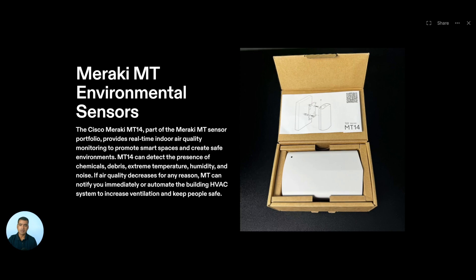The first one is MT Environmental Sensor. It provides real-time indoor air quality monitoring to promote smart spaces and create a safe environment. It can detect presence of chemical debris, extreme temperature, humidity, and noise. If air quality decreases for any reason, MT can notify you immediately as part of the alerting or automate the building HVAC system to increase ventilation. You can also automate things by using APIs.